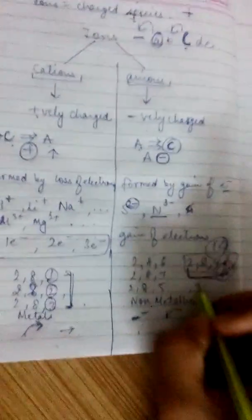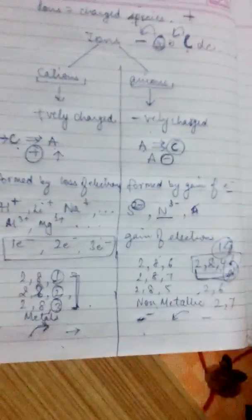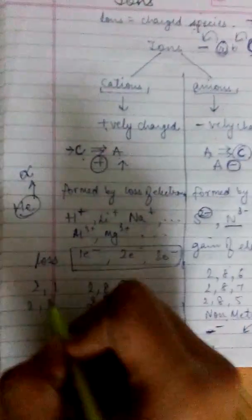We have 2, 6 and 2, 7 as well. Over here in cations, we have 2, 1, 2, 3, 2, 2, such like this.